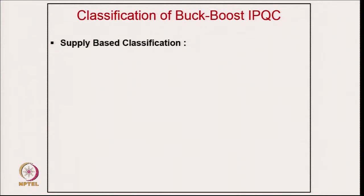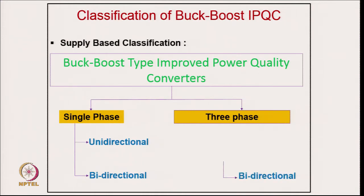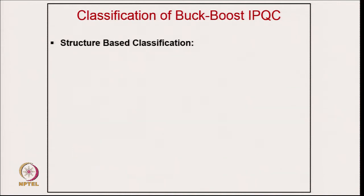Coming to the classification, we classify based on the supply system. Buck-boost improved power quality converters can be classified as single-phase or three-phase. Within single-phase, we can have unidirectional and bidirectional power flow directions, and similarly for three-phase.